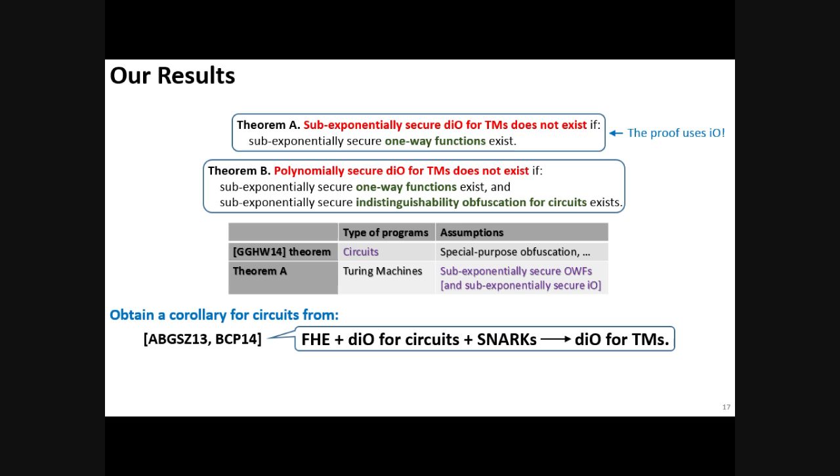Moreover, it was previously shown that fully homomorphic encryption along with DIO for circuits and SNARCs give DIO for Turing machines. So if you are willing to additionally assume fully homomorphic encryption and SNARCs, then we can lift our negative results from Turing machines to circuits.